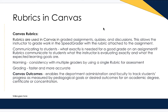Rubrics can be used in a number of ways. I'm going to focus on two different ways: one is communicating and grading students, and the other way is to use Canvas outcomes. Rubrics in Canvas can be used for graded assignments, quizzes, and discussions, and it allows the instructor to grade work in SpeedGrader as the rubric is attached to the assignment.